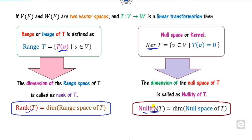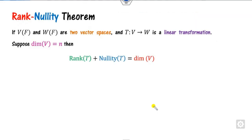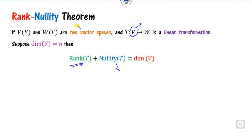The rank nullity theorem states that the rank of the transformation plus the nullity always equals the dimension of the domain. The proof is very simple and we will see it in this video in a very concise way.